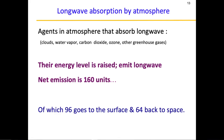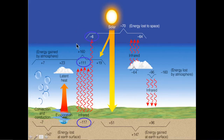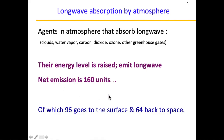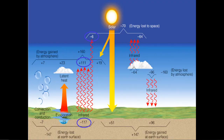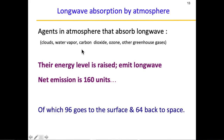There are agents in the atmosphere — clouds, water vapor, carbon dioxide, nitrous oxide, sulfur oxide, and the ozone layer — which are greenhouse gases. These agents take up the energy and elevate it: 111 units emitted from the surface becomes 160 units in the atmosphere, because these agents undergo chemical reactions that increase the temperature of the emission. So long wave absorption by the atmosphere is 160 units.